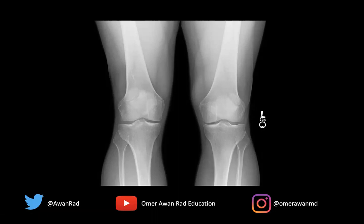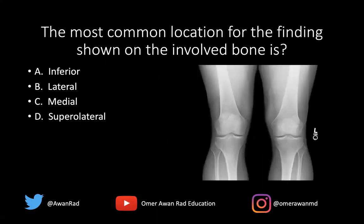Hello everyone, and welcome to MSK Unknown Case Series number 31. We have a frontal radiograph of bilateral knees in a patient presenting with very mild chronic knee pain. The question I have for you is: the most common location for the findings shown on the involved bone is what?